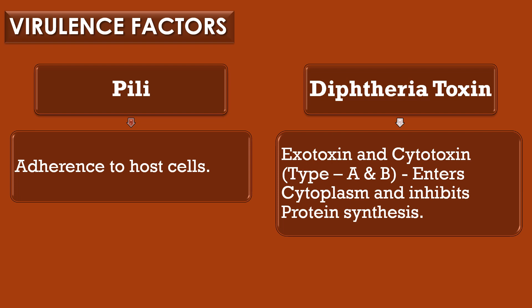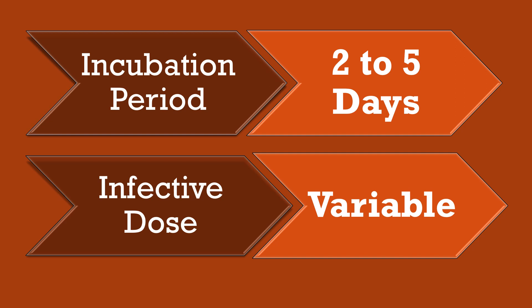The ability of microorganisms to cause disease is called virulence. The term virulence was first coined by Louis Pasteur. Virulence factors are responsible for causing infection in human beings. Corynebacterium diphtheriae produces two types of virulence factors: pili and diphtheria toxin. Pili attach to the host cell and cause infection. The diphtheria toxin is a type of exotoxin and cytotoxin. There are two types: type A and type B. The incubation period is 2 to 5 days and the infective dose required is variable.